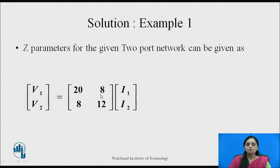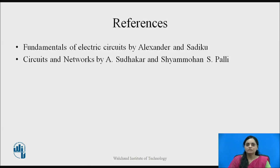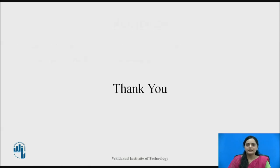The total solution of this example shows that Z12 and Z21 are both equal to 8 ohms, which indicates that the given network is reciprocal. This video lecture was created using the following references. Thank you.